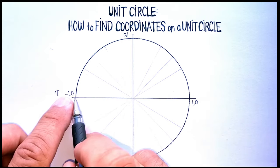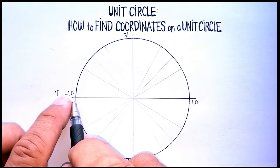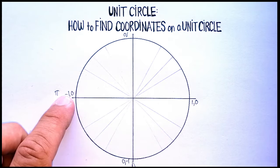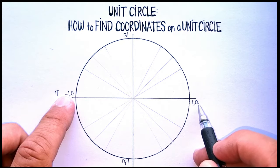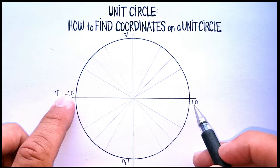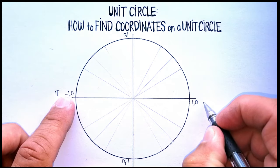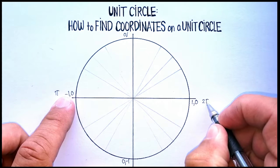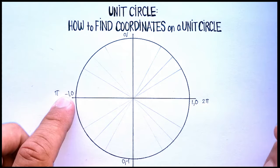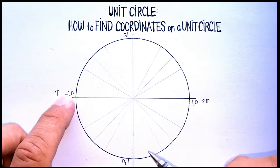The whole top half of the circle is pi, and the whole bottom half is also a distance of pi. So we could call (1, 0) either 0 or 2 pi. Let's go ahead and write that up there as well.